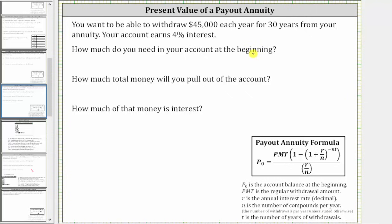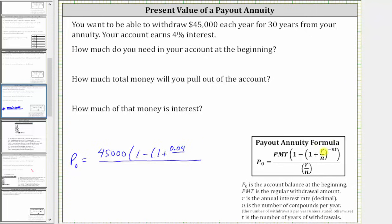Because the first question is asking for the beginning balance, we need to find P₀. P₀ equals a fraction where in the numerator we have PMT — the regular withdrawal amount of $45,000 — times the quantity one minus (1 + R/N) raised to the power of negative NT. R is 4%, or 0.04 as a decimal, divided by N. Because withdrawals are once per year, we assume N is 1, so the exponent is negative 1 times T = 30. In the denominator we have R/N, which is 0.04 divided by 1.